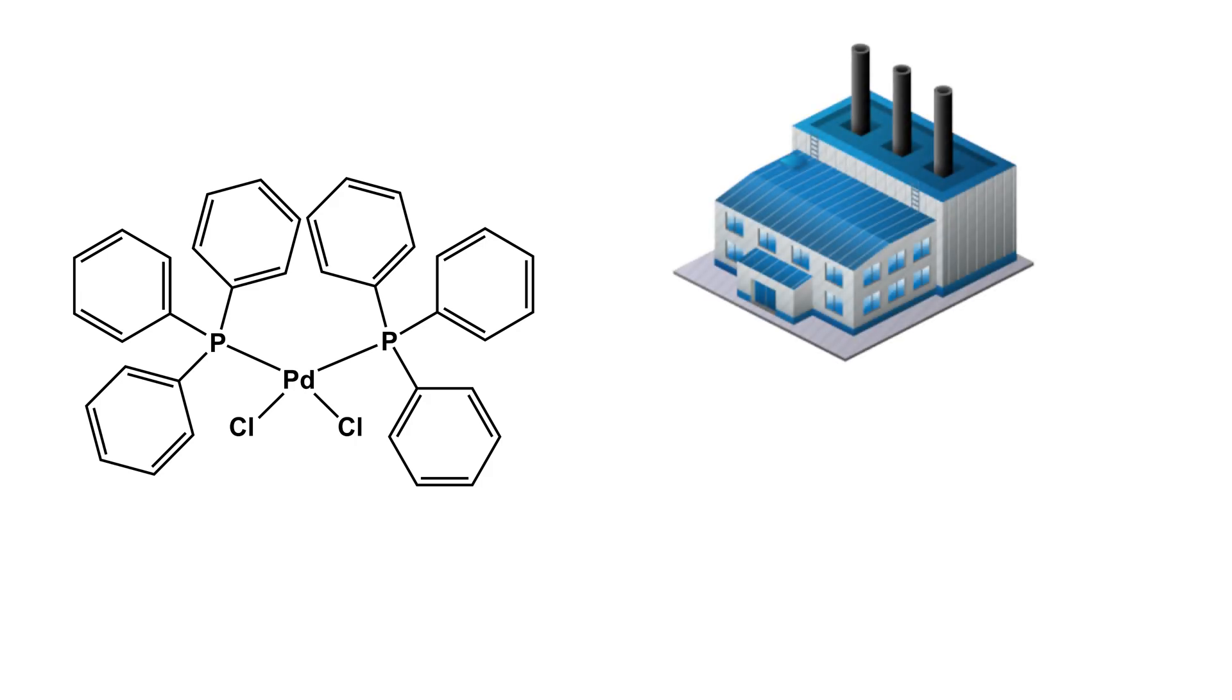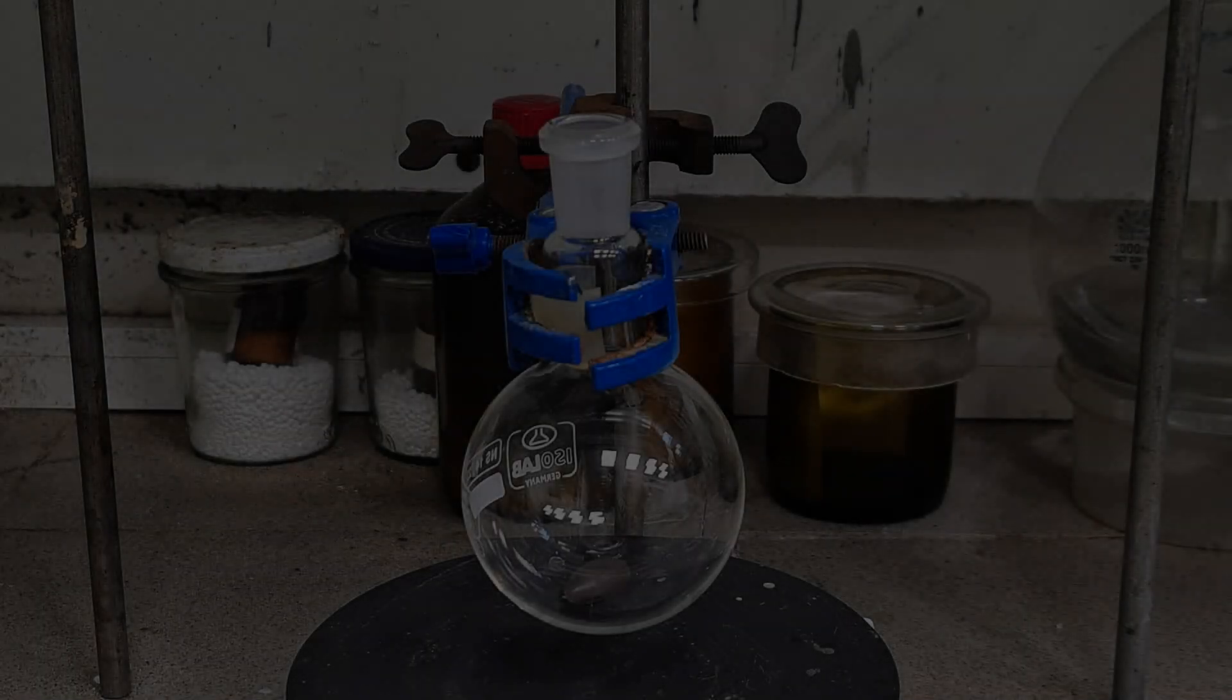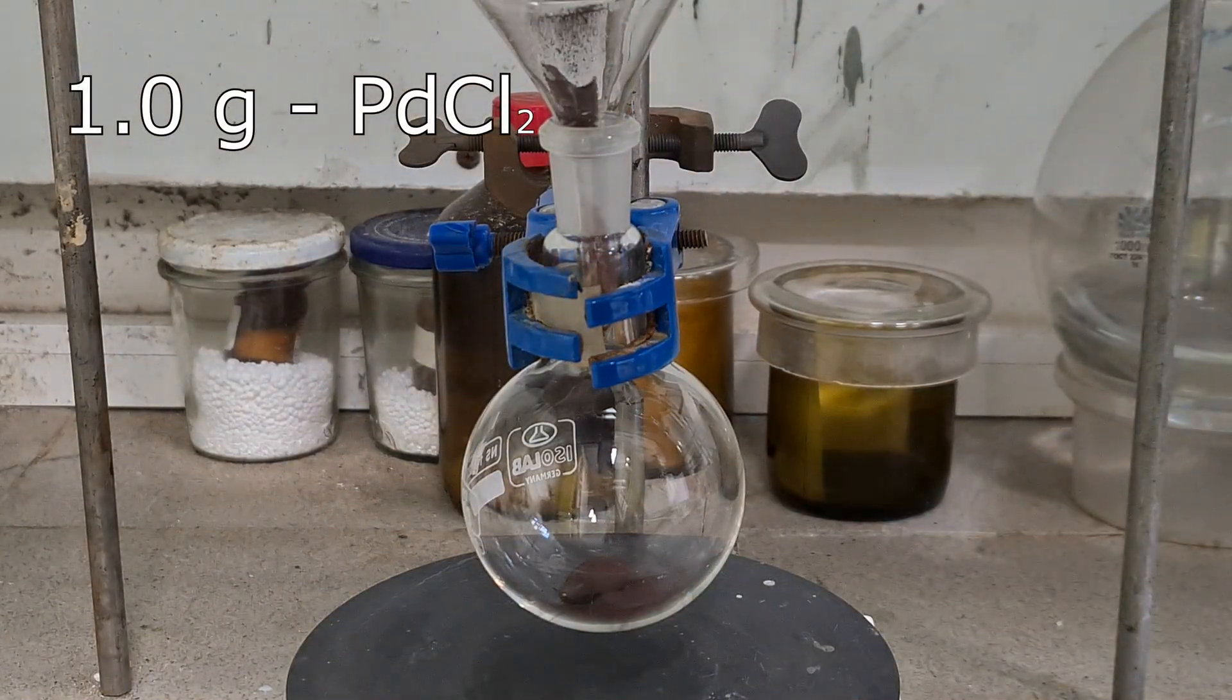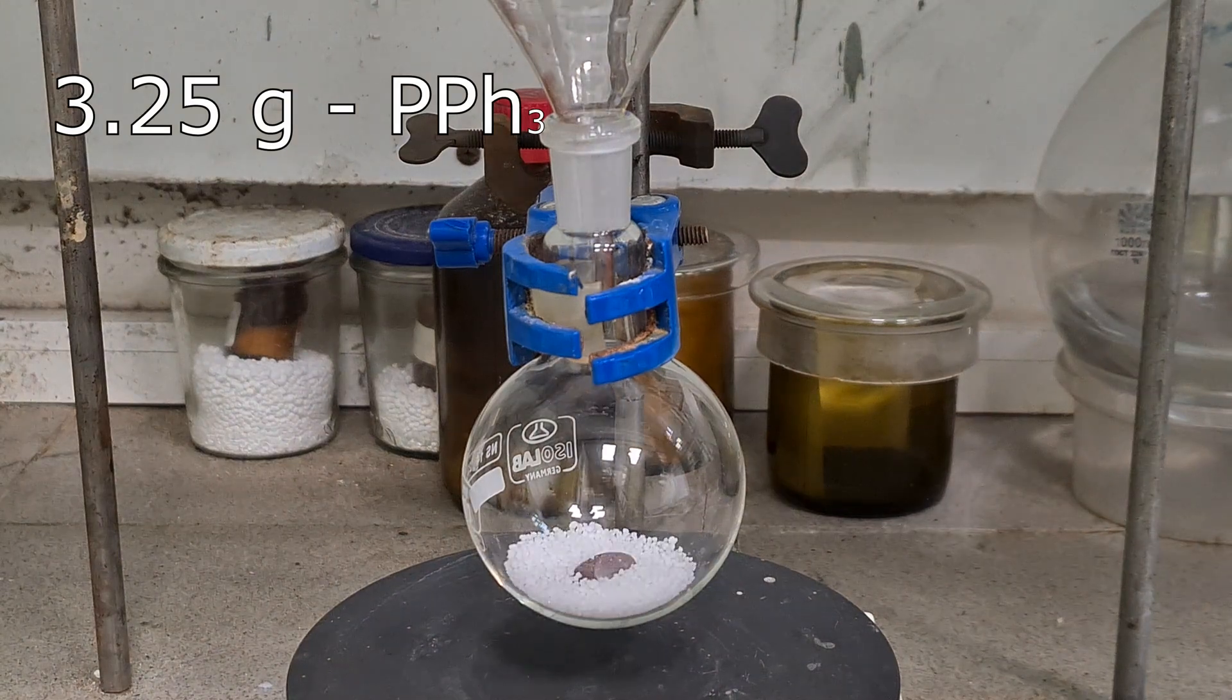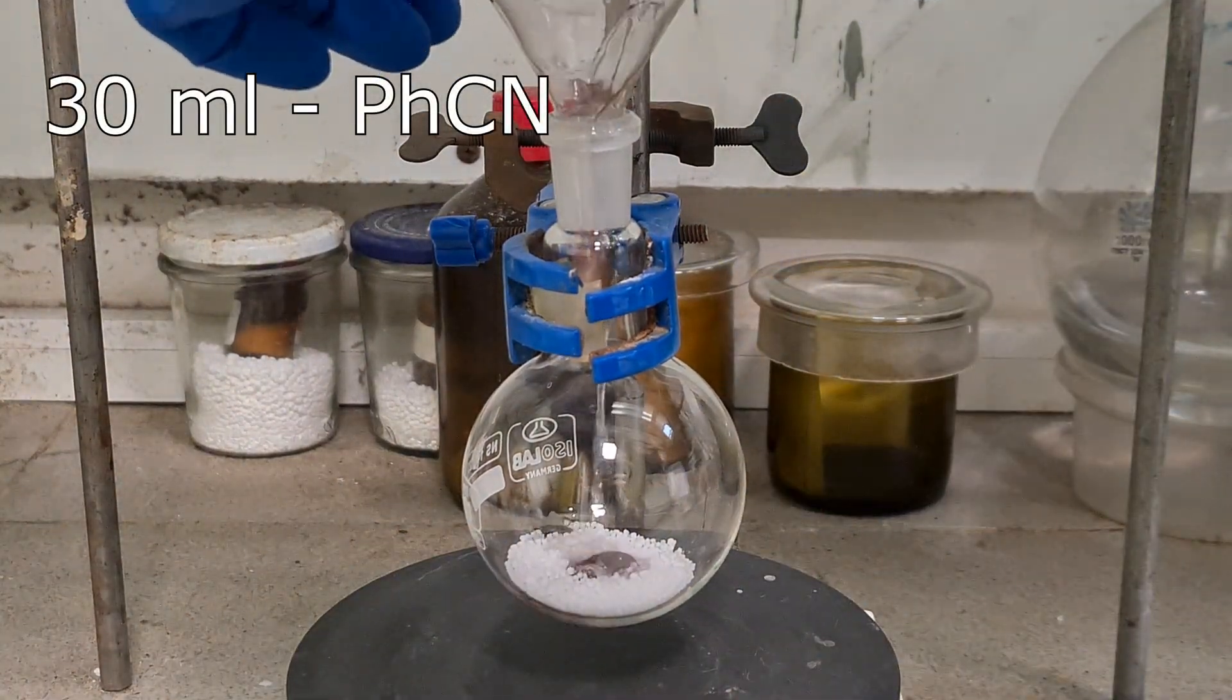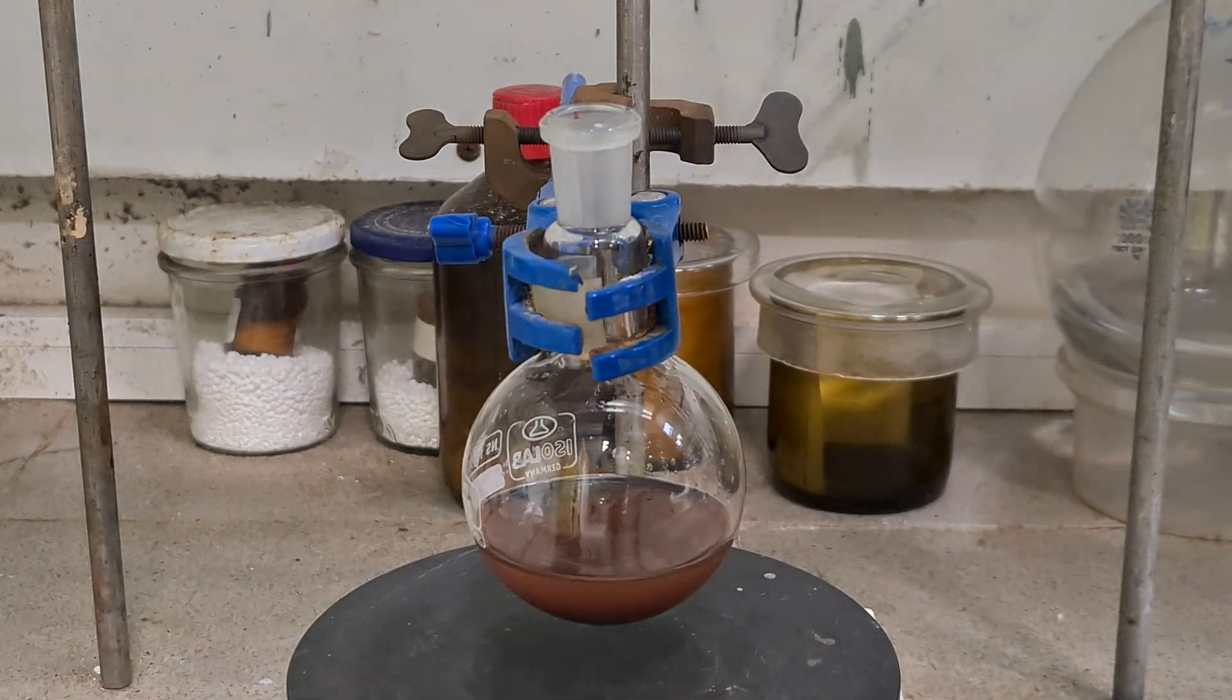Also it's a pretty common catalyst for unsymmetrical Sonogashira reaction. OK, let's get started. First, put 1 gram of palladium dichloride in a round bottom flask with a stir bar. Then, put 3.25 grams of triphenylphosphine and pour 30 ml of benzonitrile to it. Acetonitrile could be used for sure, but it results in lesser yield.